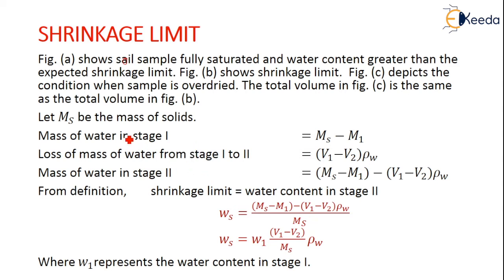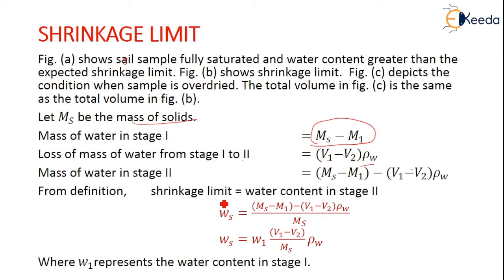Let Ms be the mass of solids. The mass of water in stage 1 is Ms minus M1. The loss of mass of water from stage 1 to stage 2 is (V1 − V2) × ρw, the unit weight of water. The mass of water in stage 2 is Ms − M1 − (V1 − V2) × ρw. From the definition of the shrinkage limit: Ws = W1 − [(V1 − V2) × ρw / Ms], where W1 is the water content in stage 1.